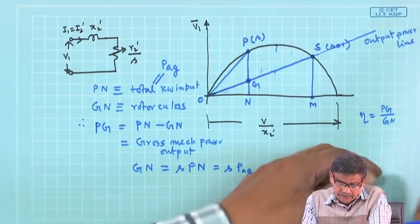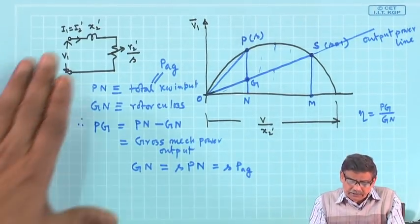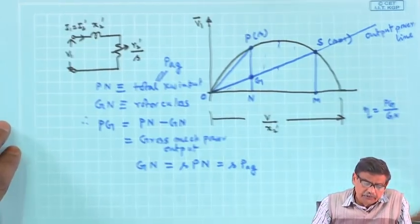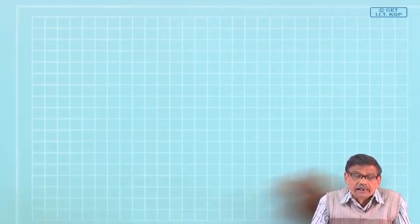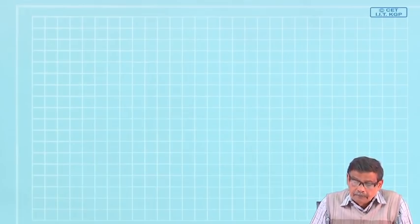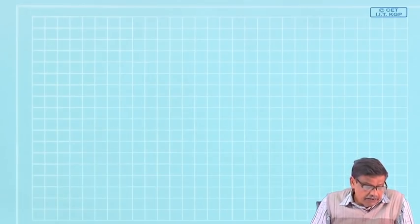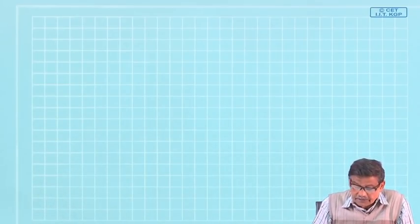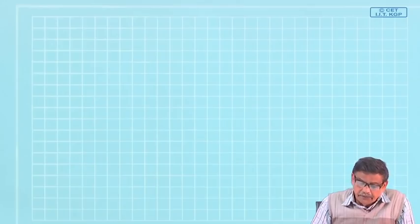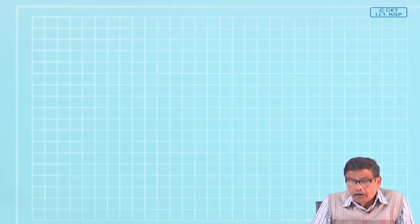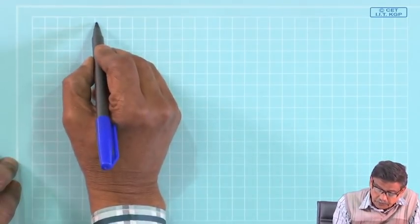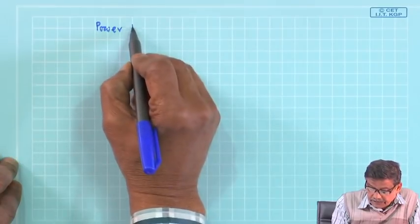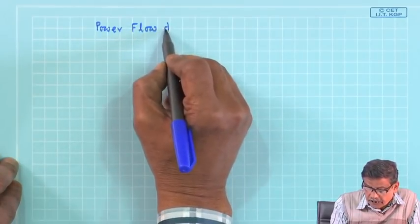This simplified approach gives some indication, but for more accurate results you should not neglect all stator parameters. Before going to the circle diagram of the original full equivalent circuit, let us once again reiterate the power flow diagram of the induction motor.